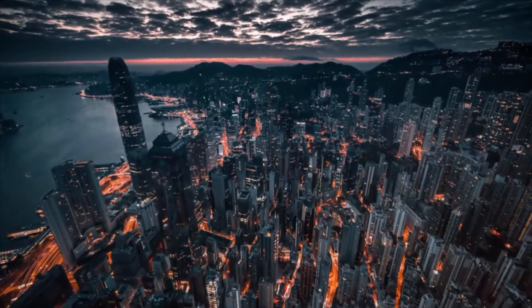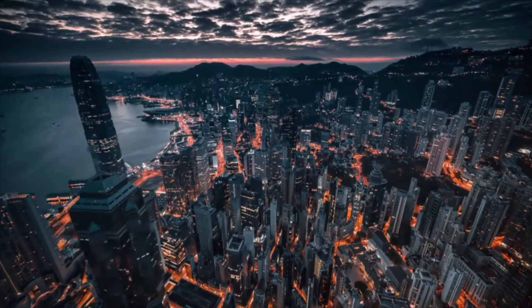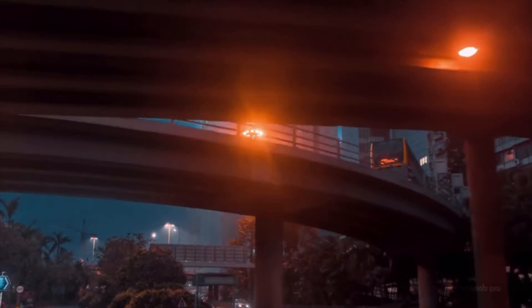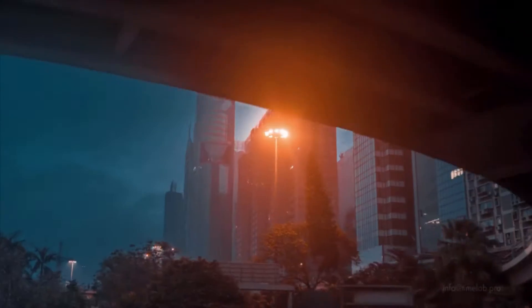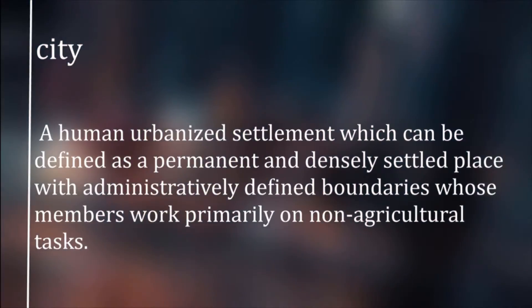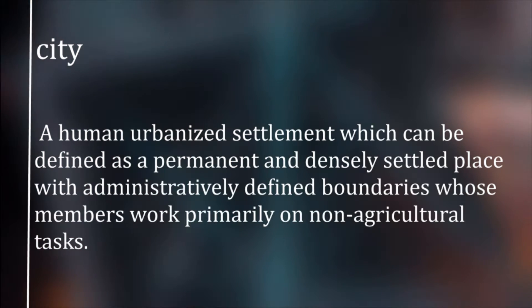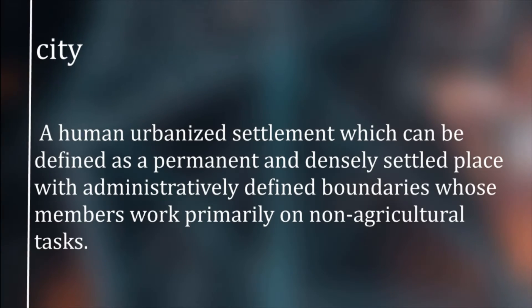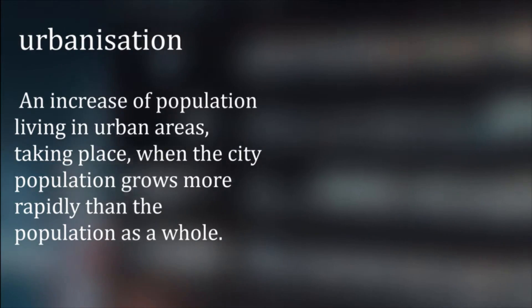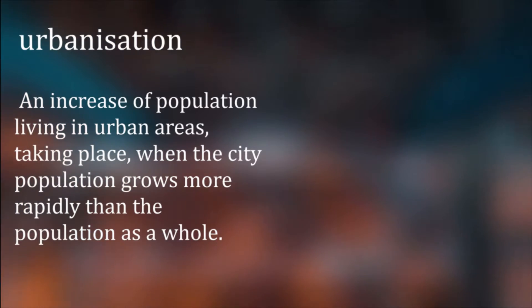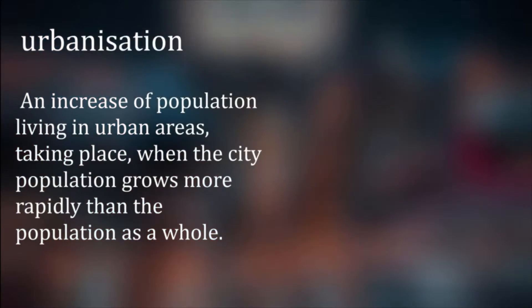We are going to talk about urban land use and which model can represent a city's growth and development most accurately. A city is a human urbanized settlement, defined as a permanent and densely settled place with administratively defined boundaries, whose members work primarily on non-agricultural tasks. Urbanization is an increase of population living in urban areas, taking place when the city's population grows more rapidly than the population as a whole.